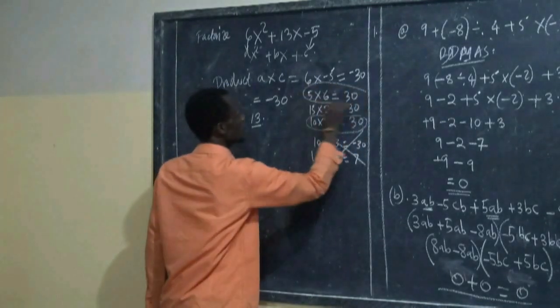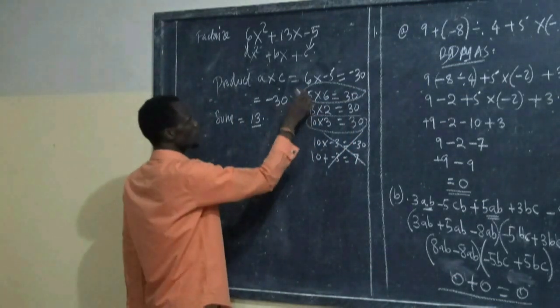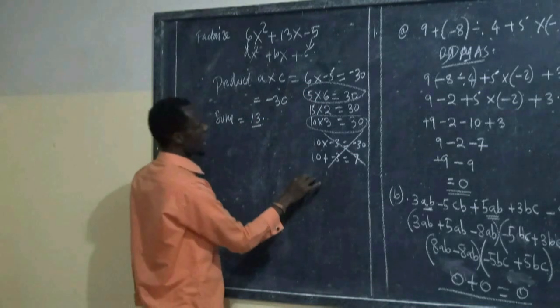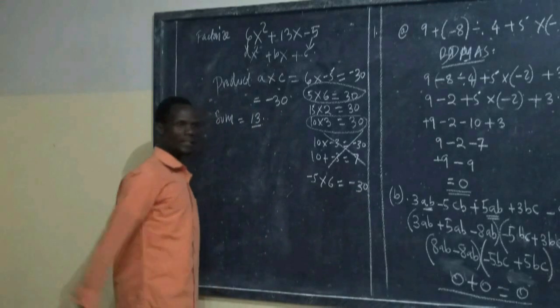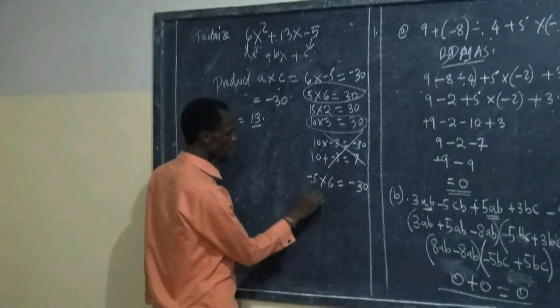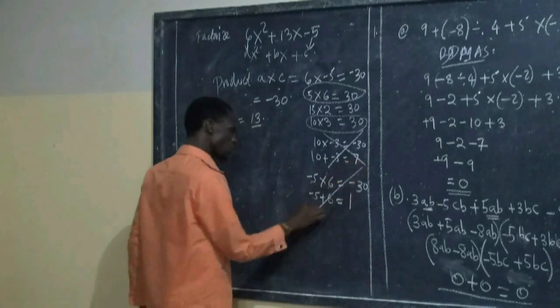If you count this one, 5 times 6, let us put here negative. Then we have negative 5 times 6, we get negative 30. But negative 5 plus 6 is equal to 1. This is totally wrong.